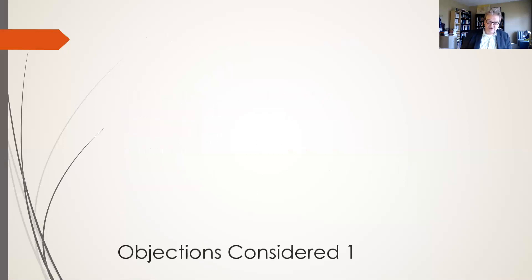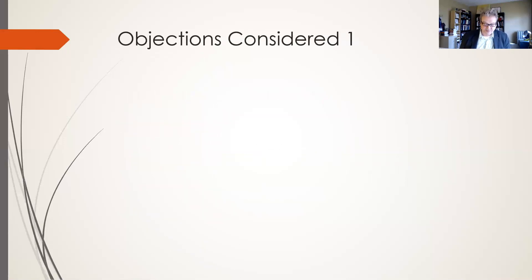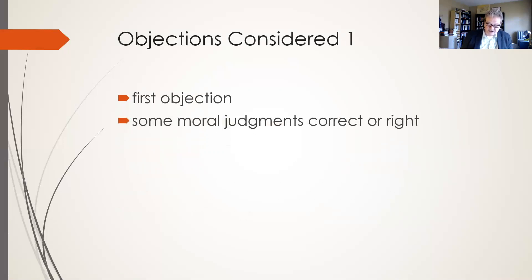In the last section of the paper, the author presents objections to his view. The first objection is that in some cases, advocacy would be the right thing to do, because some moral judgments about social policy can be said to be correct or right. Kupperman accepts the objection to the extent that he qualifies his thesis. Advocacy is usually unjustified, he says, but not always.